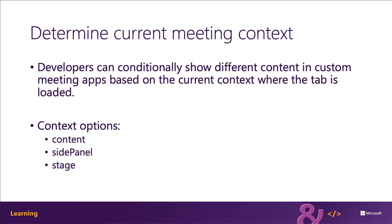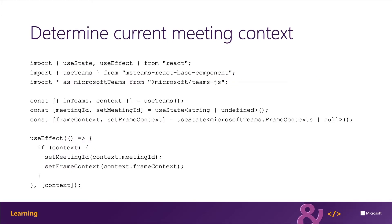We're going to do that in our demo. The current meeting context is available to developers using the Microsoft Teams context object, which is passed into the custom app. The context object contains a property called the frame context. The Yeoman generator for Microsoft Teams includes an NPM package called the MS Teams React Base Component Package, which contains a React hook called Use Teams. It's based on the Microsoft Teams JavaScript SDK, and you can use this hook in your meeting app tab to get the current tab's context.